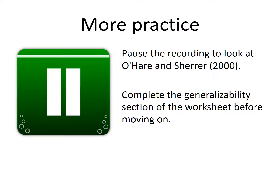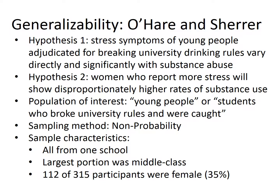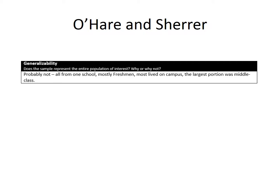Now pause the recording to look at O'Hare and Share. Complete the generalizability section of the worksheet before moving on. There are a few things that might have stuck out for you. We could question whether students from one school would represent other schools, particularly given the large portion that was middle class. Having a relatively low portion of women might also make us hesitant about the results related to gender and substance use. Here's an example of what your notes in this section might look like.